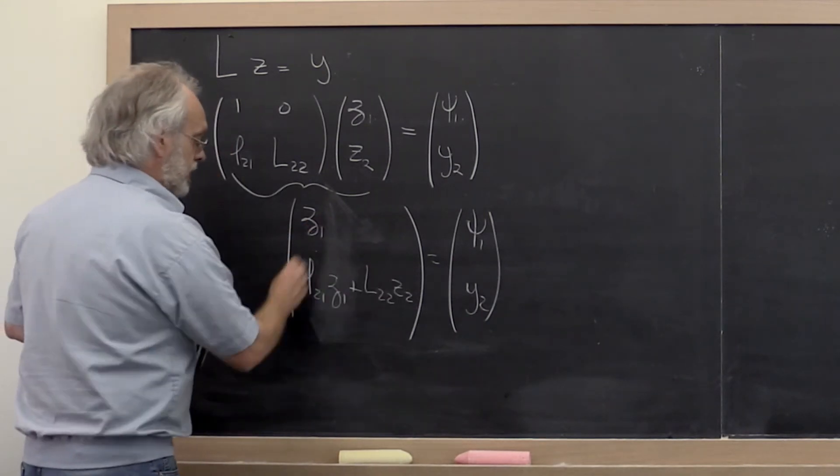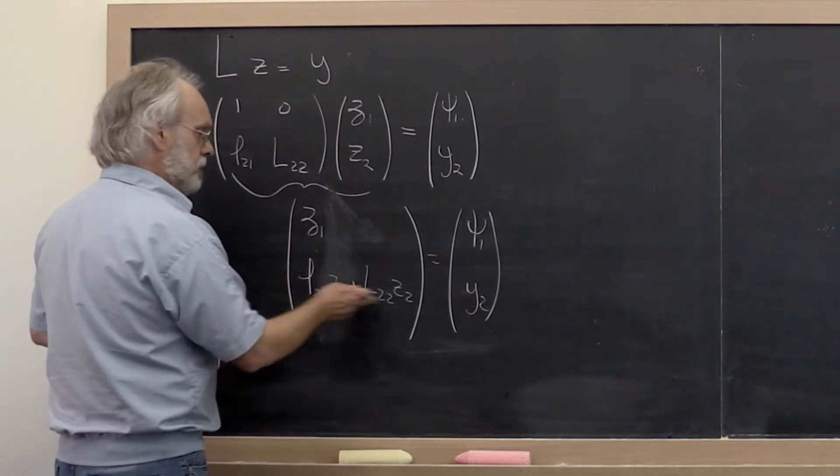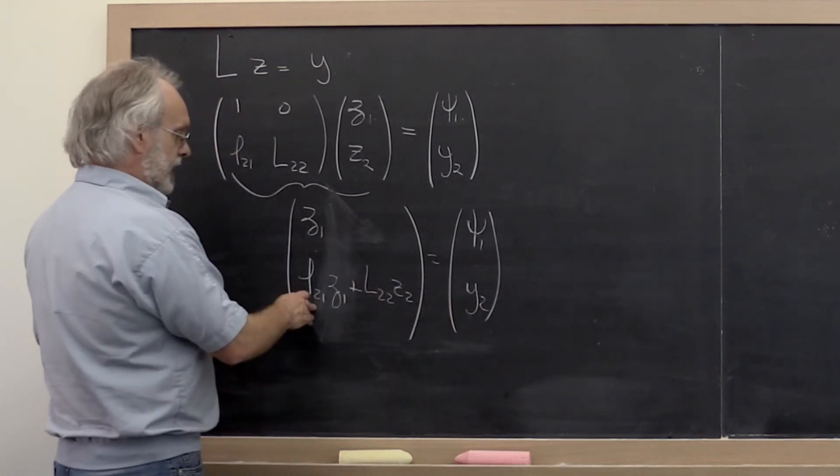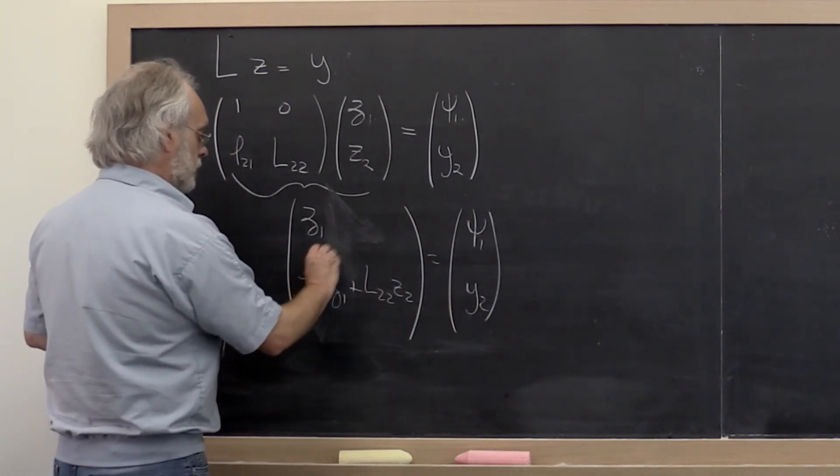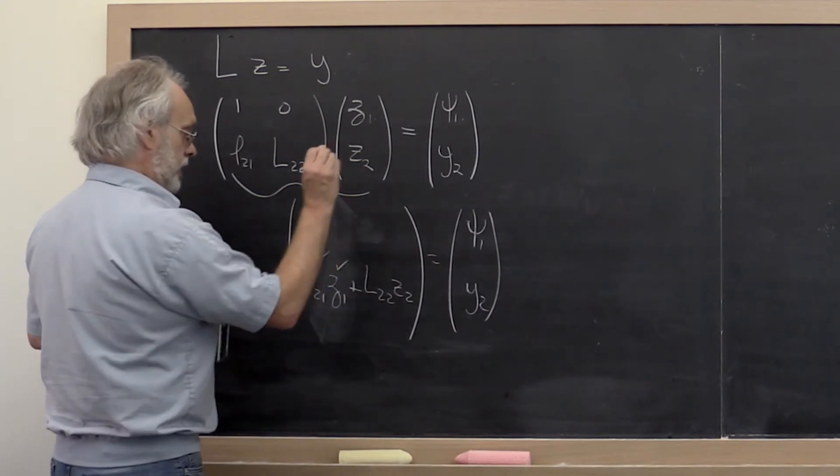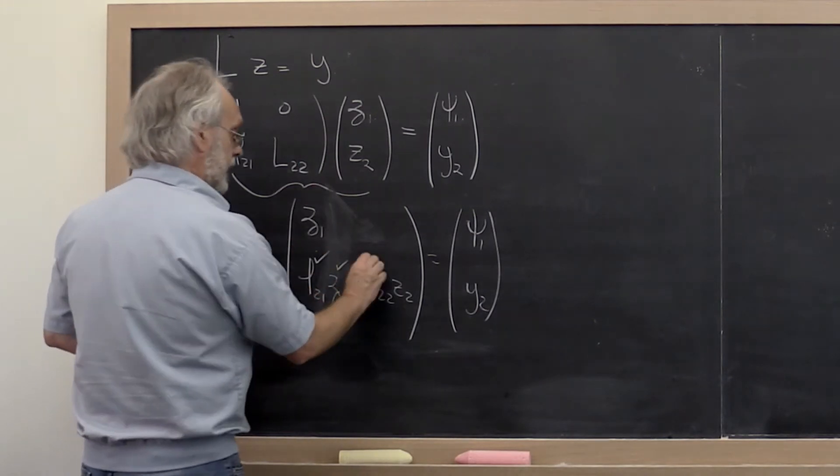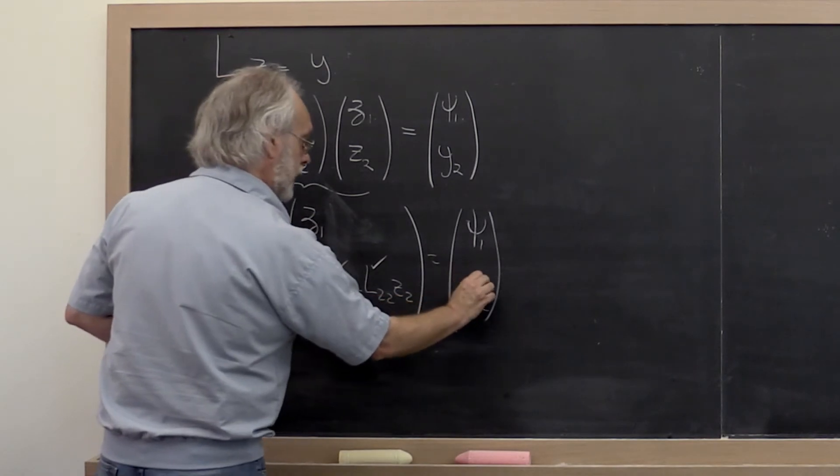Okay? And then we look at this and we say, okay, we know that this must be equal to that. But by the time we get here, we know what L21 is. We know what zeta_1 is. And we know what L22 is. And we know what y_2 is.